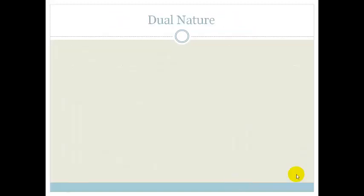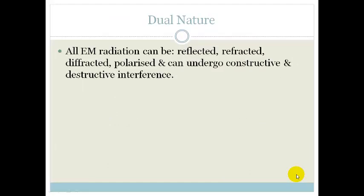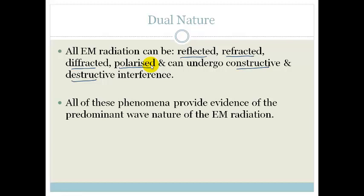Now the dual nature of electromagnetic radiation is incredibly important. So far we have seen that light and sound and waves tend to reflect, refract, diffract, undergo constructive and destructive interference, and if it is light it can be polarized. All these phenomena produce evidence that we are looking at the wave nature.